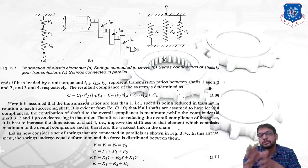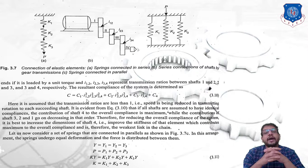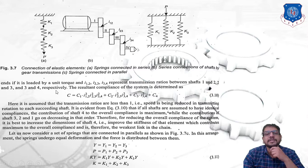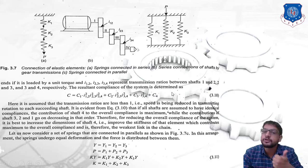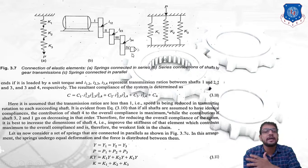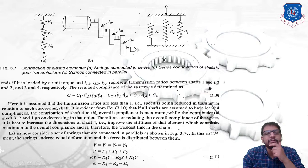The resultant compliance of the system is: C = C1·(i12²·i23²·i34²) + C2·(i23²·i34²) + C3·(i34²) + C4. It is clear that C4 contributes the most to the total compliance. Since compliance is the reciprocal of stiffness, higher compliance means lower stiffness and thus lower resistance to deformation. Therefore, we need to increase the dimension of shaft 4.